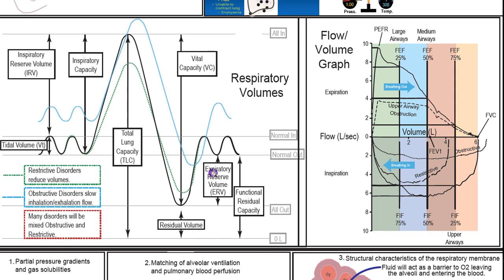Inspiratory reserve volume is how much more you can inspire after normal inspiration — the difference between all-in and normal-in. Inspiratory capacity is the difference between a normal out-breath and all-in. Vital capacity is the difference between all-in and all-out — how much air you can move in total. Expiratory reserve volume is the volume of air you can breathe out after a normal breath out. Functional residual capacity equals expiratory reserve volume plus residual volume, where residual volume is about one liter of air left in the lungs after breathing out. Total lung capacity is vital capacity plus one liter.